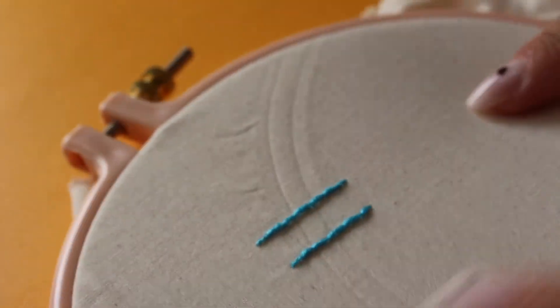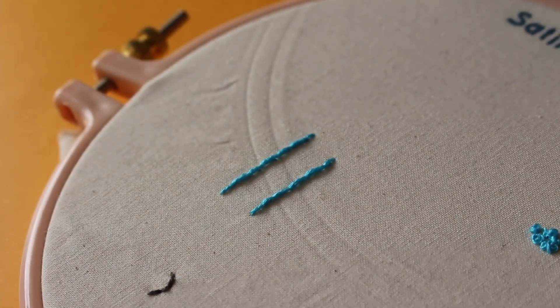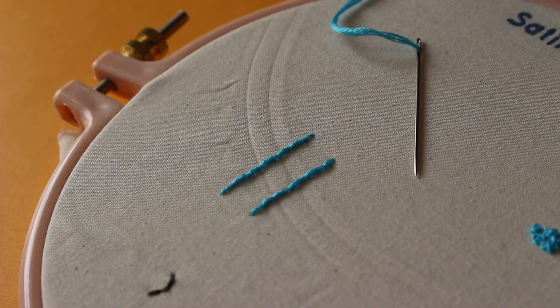You could finish off by just doing a regular stitch and tying off your knot. That is how you do the stem stitch. As always, if you have any questions leave them down in the comments below. I appreciate you guys watching and I will see you on the next tutorial.